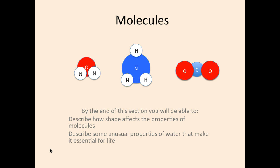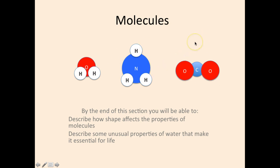Each of the three that you see here are different compounds. We have water, ammonia, and carbon dioxide. By the end of this section, you should be able to describe how shape affects the properties of molecules and some of the unusual properties that water has that makes it essential for life.